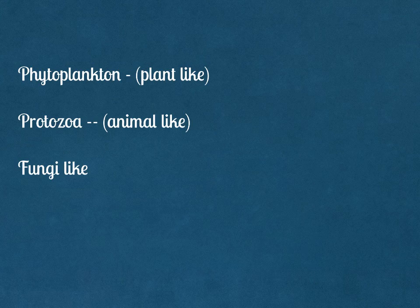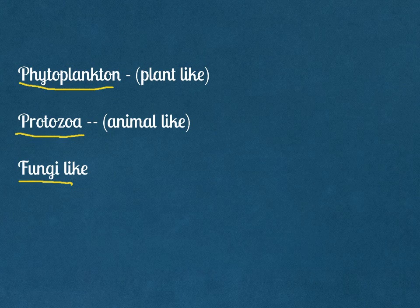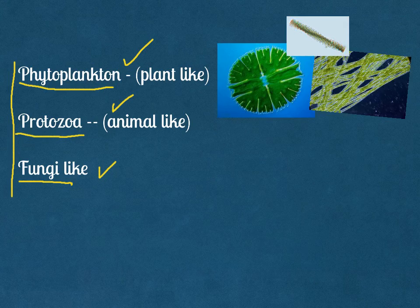We can classify protists into three general types. The first are plant-like protists, also known as phytoplankton — phytoplankton is an example of a plant-like protist. We also have protozoa, which are animal-like protists that look like animals, and fungi-like protists that look very similar to fungi. They can also resemble bacteria, but remember that protists have a nucleus and bacteria do not.